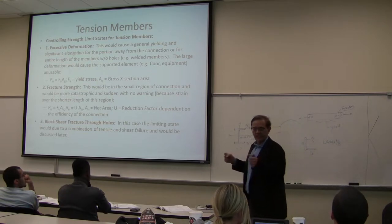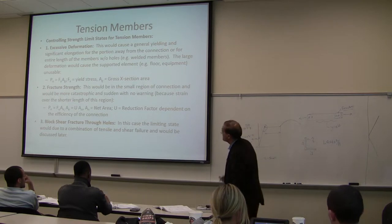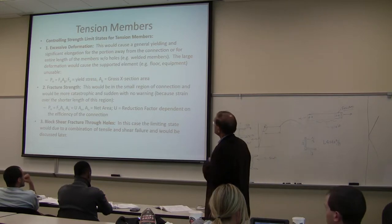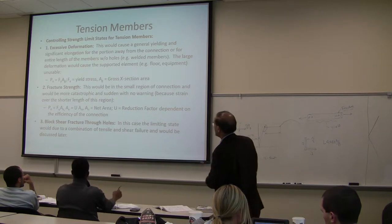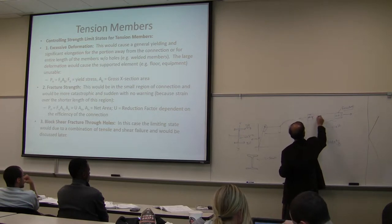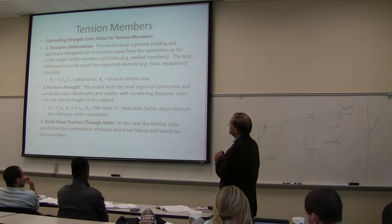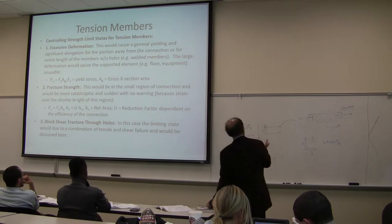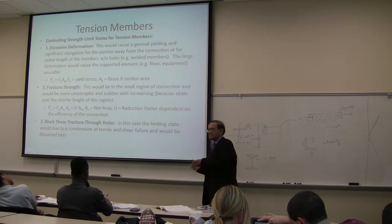The third limit state is block shear or fracture through holes — a block of material is pulled away. These are the three failure mechanisms we are trying to avoid. Whichever is the weakest link determines the capacity of the tension member. In the yielding case, you are stretching the member with significant lengthening — you get warning. In fracture, you break down suddenly and the brace collapses with little warning.